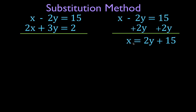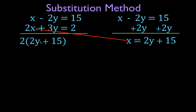Now we're going to do the substitution part of the substitution method. We are going to substitute this x value, which is 2y plus 15, into the other equation for the x value. We're going to take the x out, and in place of that, we're going to substitute 2y plus 15. So I wrote down 2x — well, x is 2y plus 15, so of course I wrote 2 times (2y plus 15). Remember, we have 3y; you've got to write that down. Equals 2.